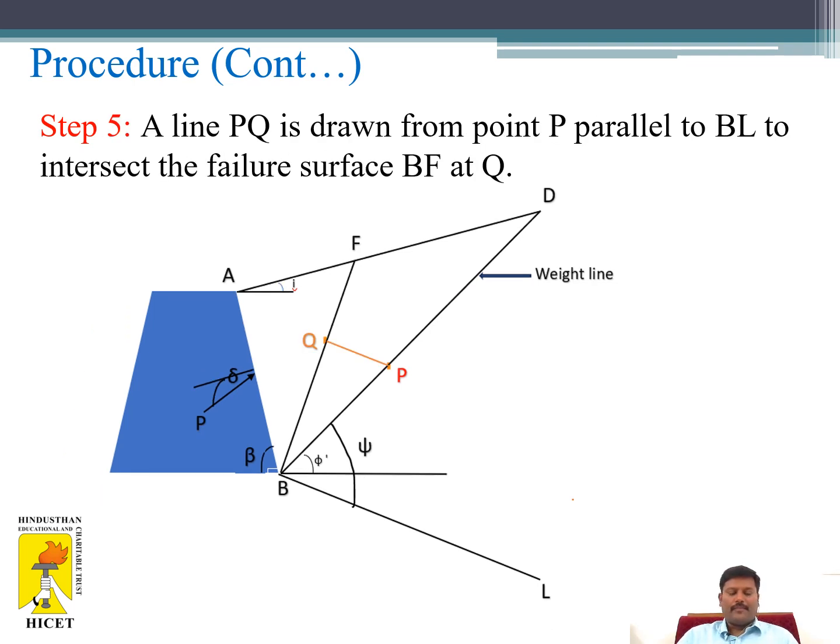Step 5: After plotting point P on the weight line, a line PQ is drawn from point P parallel to BL to intersect the assumed failure surface BF at Q.